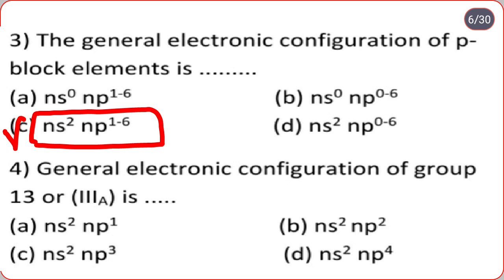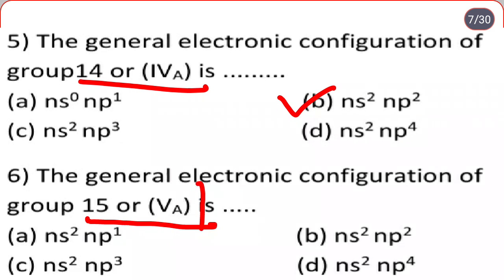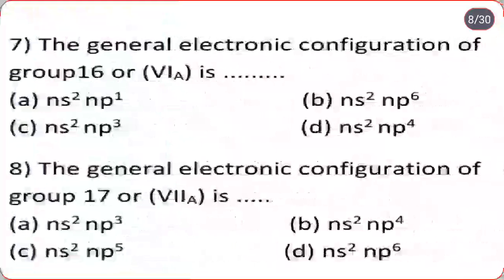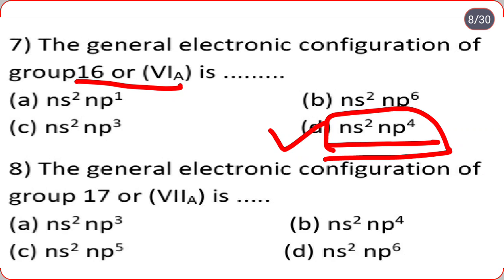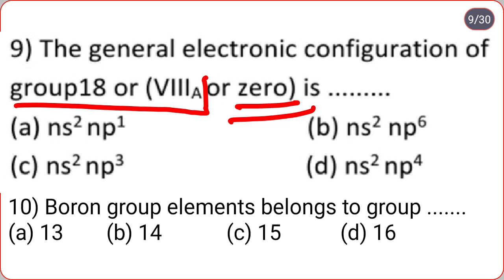General electronic configuration for group 13 (3A) is ns²np¹ — option A. For group 14 (4A) it is ns²np² — option B. For group 15 (5A) it is ns²np³ — option C. For group 16 (6A) it is ns²np⁴ — option D. For group 17 (7A) it is ns²np⁵ — option C. For group 18 (8A or 0 group) the general electronic configuration is ns²np⁶ — option B.